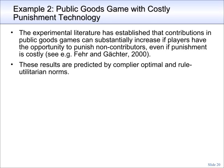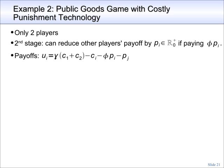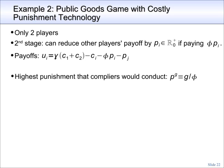The experimental literature has established that contributions in a public goods game can substantially increase if players have the opportunity to punish non-contributors, even if the punishment is costly. I will show that these results are also predicted by complier optimal and rule utilitarian norms. For simplicity, we assume there are only two players. After players have contributed to the public good, there will be a second stage where players can reduce the other player's payoff. If a player reduces the other player's payoff by an amount pi, he has to pay himself an amount phi times pi, where phi is some positive constant. A sequentially rational selfish player will never perform any punishment. The maximum punishment a compliant player is willing to perform is bounded by his moral motivation g, and is given by g divided by phi, the marginal cost of punishment.